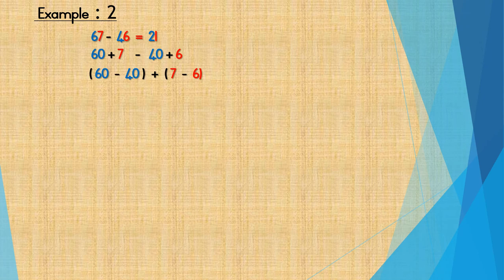Step 2: Group the numbers, that is the tens with the tens and the units with the units. So in your tens group you will have 60 minus 40. In your unit group you will have 7 minus 6. So step 2 will read 60 minus 40 plus 7 minus 6.